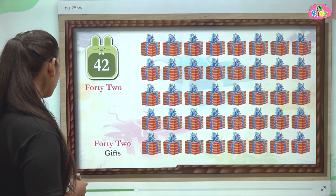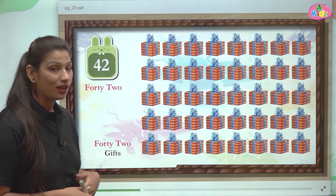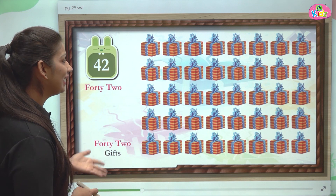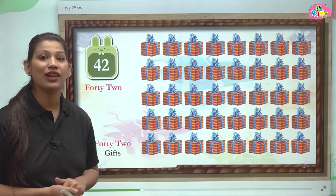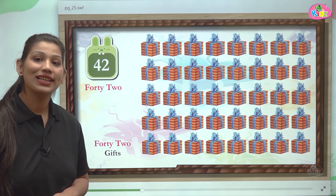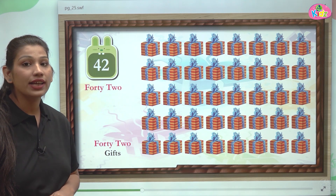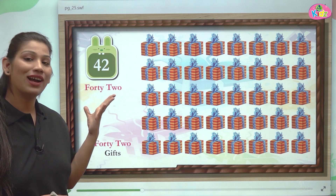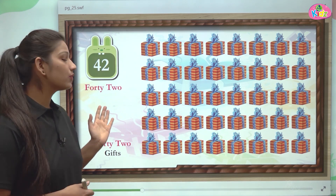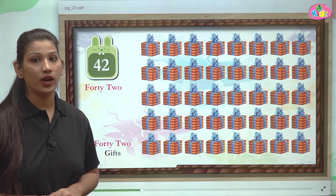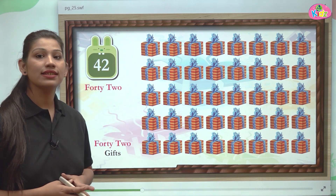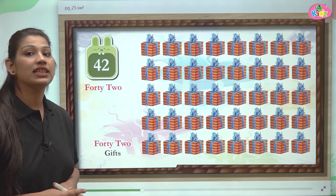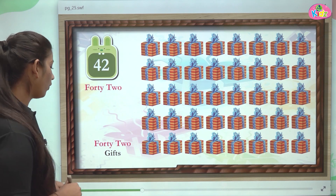After 41 there comes number 42, and here we can see gifts. All of us love gifts. These are 42 gifts. 4 and 2 is the number called 42 — 4 at the 10's position, 2 at the 1's position. F-O-R-T-Y is 40, T-W-O is 2, making 42.